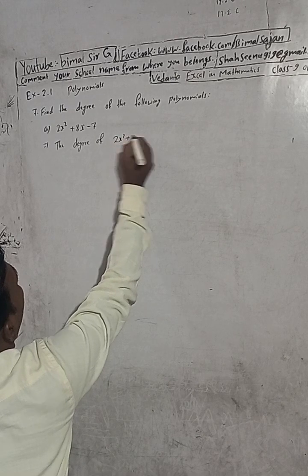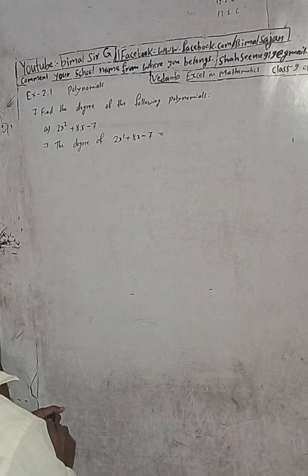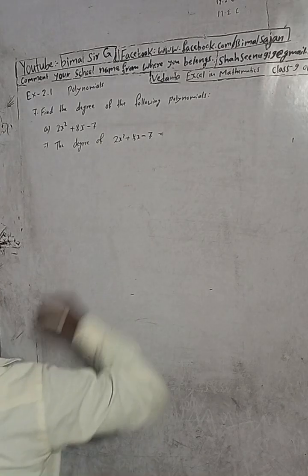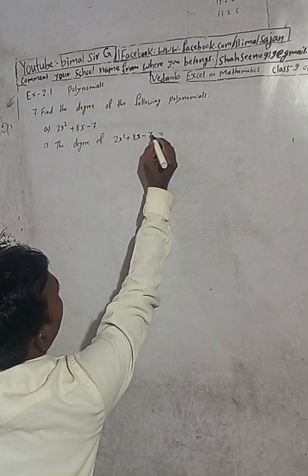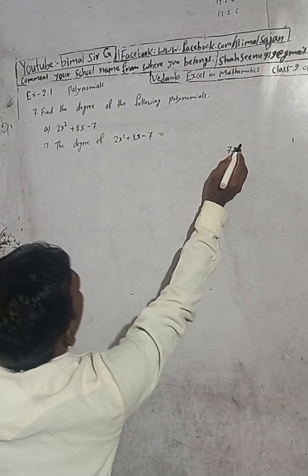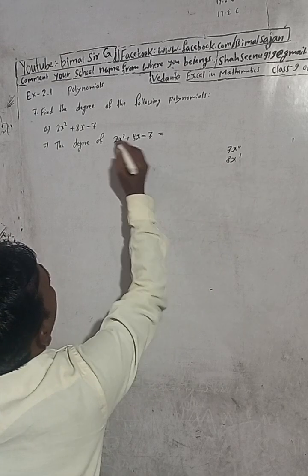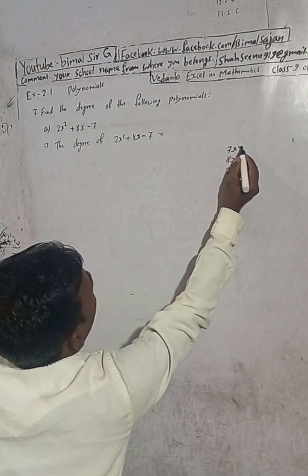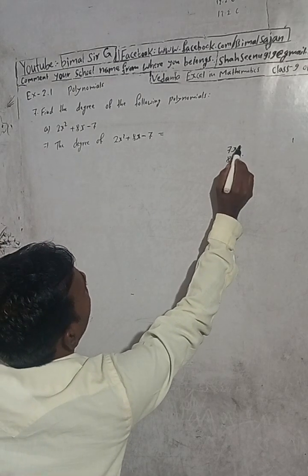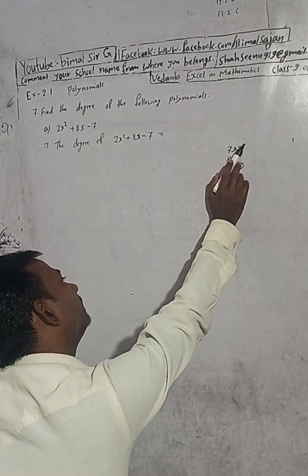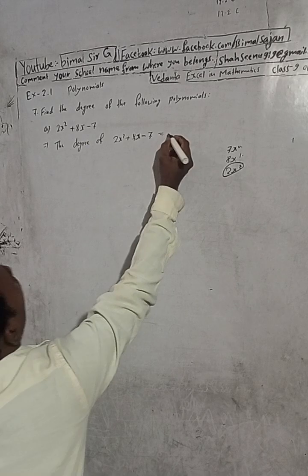For 2x squared plus 8x minus 7: degree means the highest power. You can see here — in the constant term there is 7x to the power 0, in 8x there is power 1, and there is 2x squared, power 2. So the powers are 0, 1, and 2. Which is highest? 2 is highest. That's why the degree of this polynomial is 2.